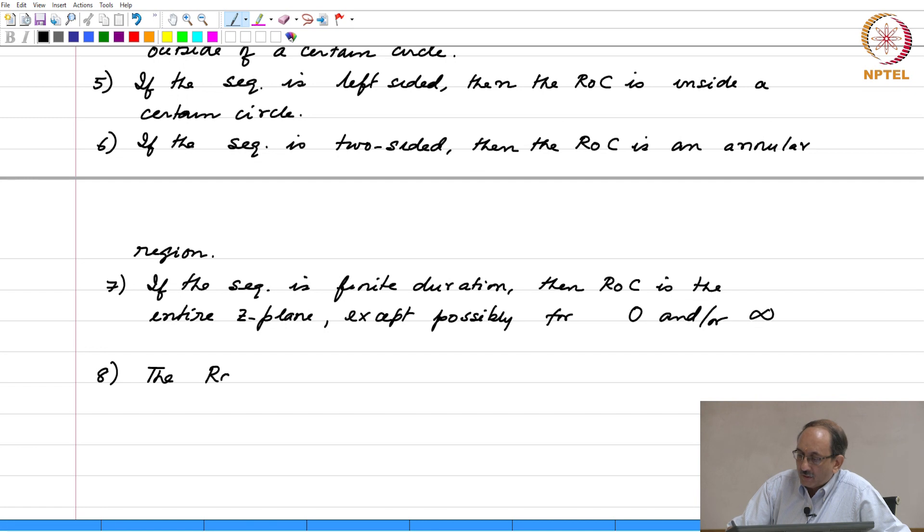Similar to the Laplace transform case, the ROC must be a connected region. That is why if you had R1 to be larger than R2, then for the right sided part, you will have a region that is outside this radius. For the left sided sequence, the region will be inside of a certain circle. If there is no overlap, these two distinct regions are not connected. ROC cannot be a disconnected region. ROC has to be necessarily a connected region, which is why z transform in those cases do not exist.